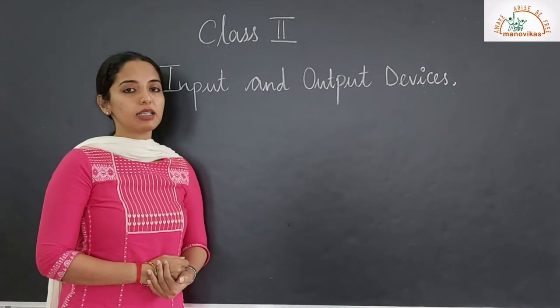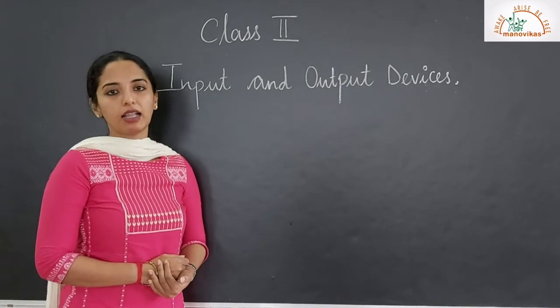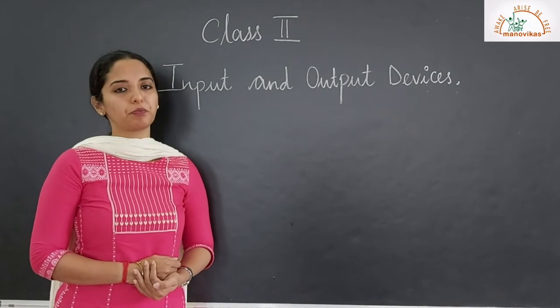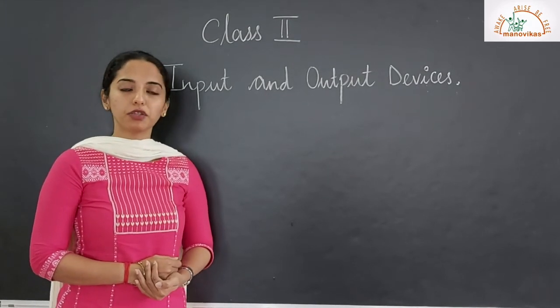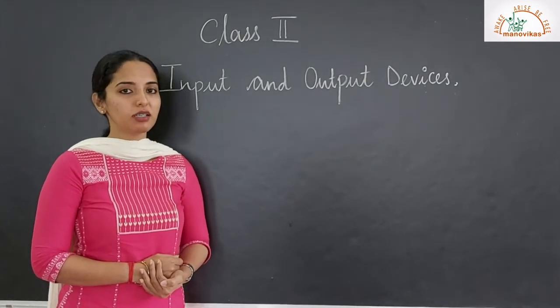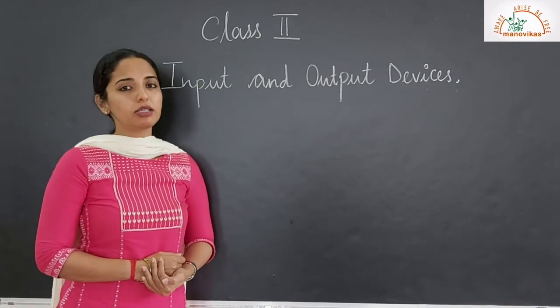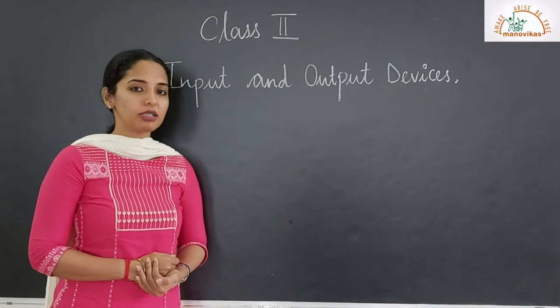And what do we get after the processing is done? We get a result, and this result is known as output. Which are the parts of the computer that show us the output? Monitor, printer, and also a speaker. So today we are going to learn about all these input and output devices of the computer. Input devices are those parts of the computer that help us to enter data in the computer system, which helps us to feed data in the computer.